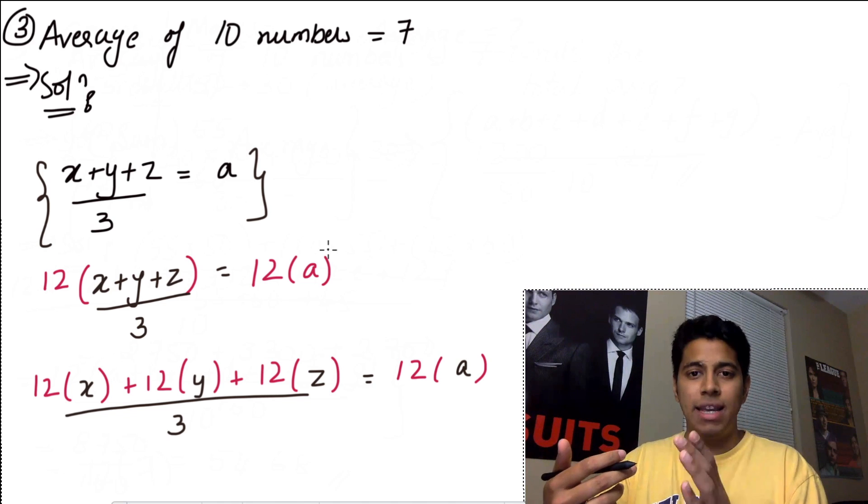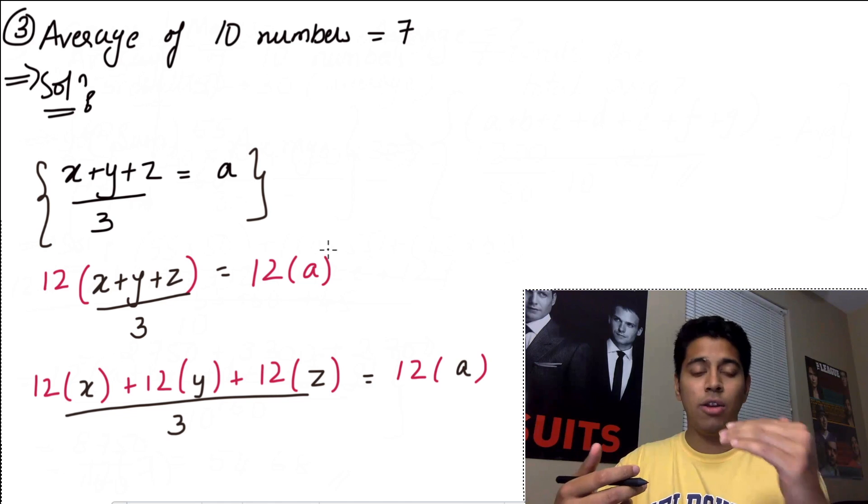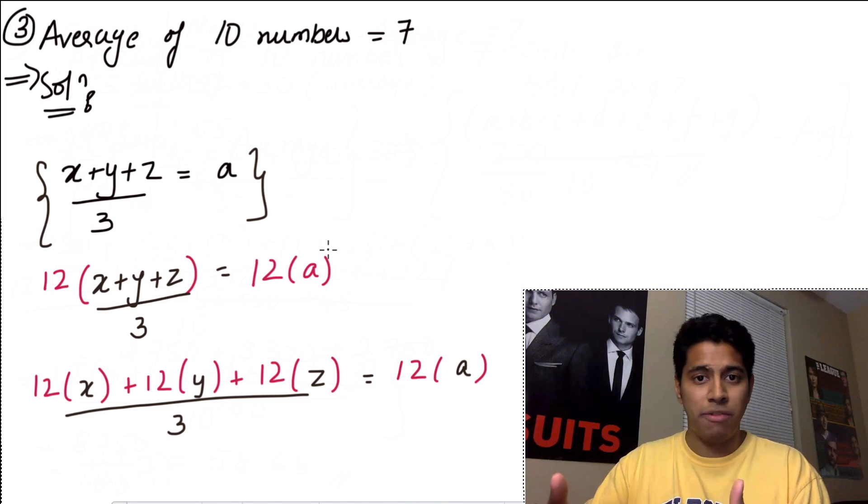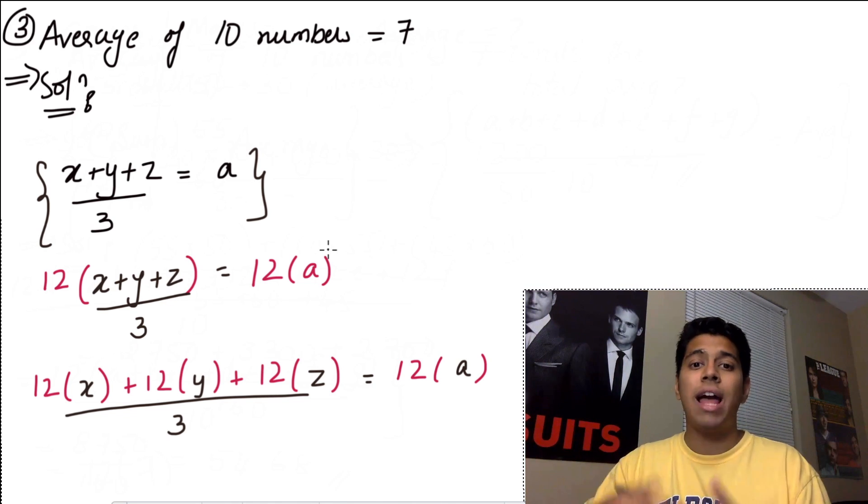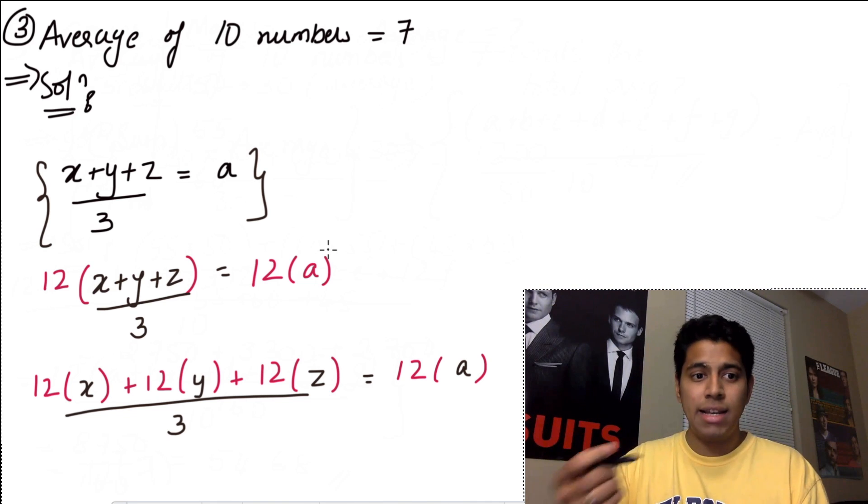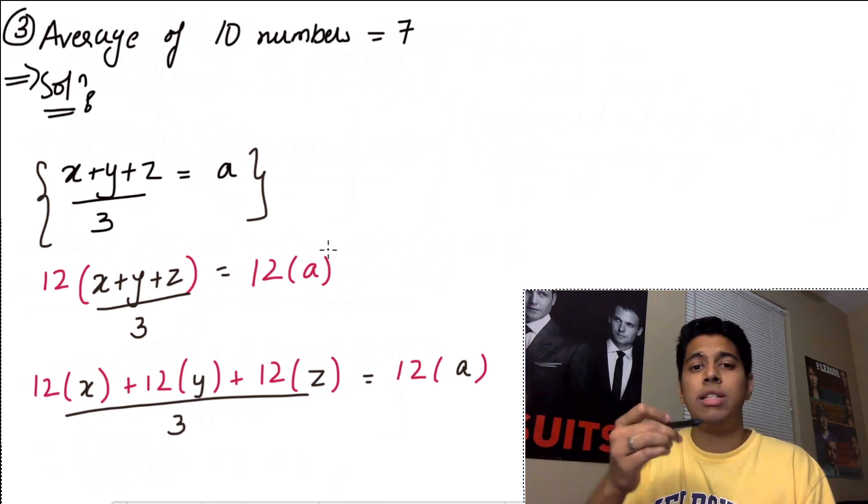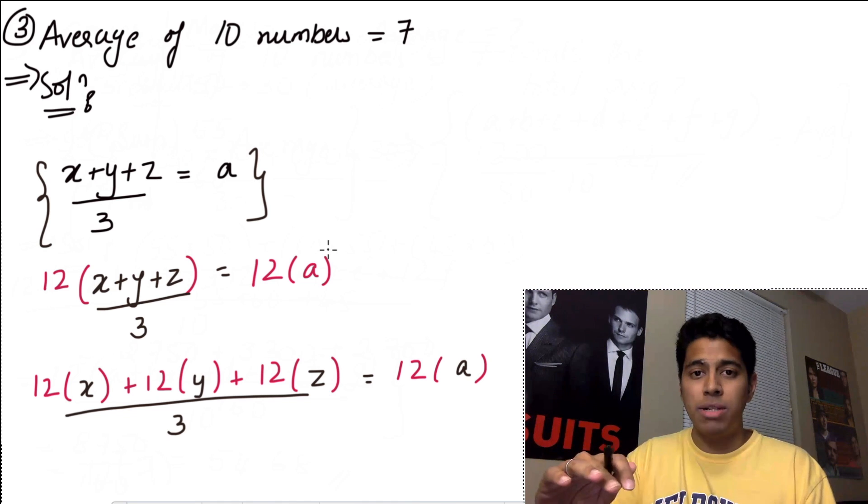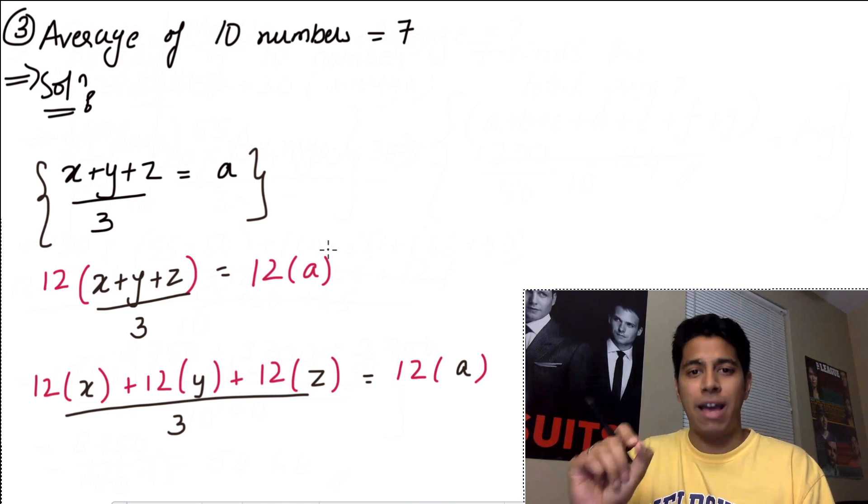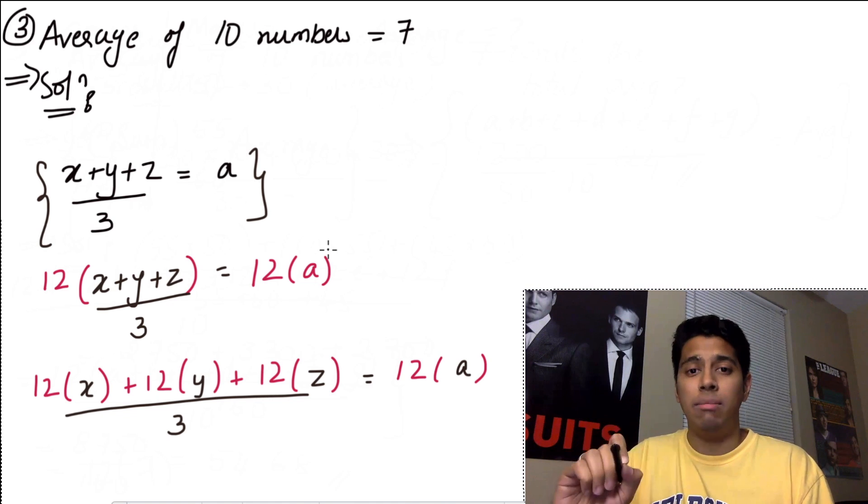So if x and y and z are all multiplied by 12, your average a will also be multiplied by 12. Suppose it is divided by, say, 6. Your average will also be divided by 6. Suppose it is added by 10, your average will be added by 10. Suppose it is subtracted by 4, your average also will be subtracted by 4. So whatever happens to all your numbers, the exact same thing will happen to the average. Keep in mind though that this operation has to happen to all the numbers.